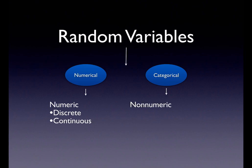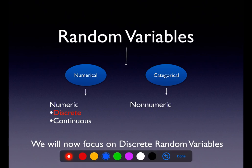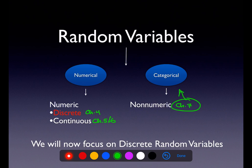On the numerical side of things we've got discrete and continuous. Chapter 4 covers discrete random variables. In categorical we have the non-numeric — the words. When we combo Chapters 5 and 6 we look at continuous numerical variables. Chapter 7 will circle back around to categorical, but will still have some numerical variables — so Chapter 7 will be both categorical and numerical.